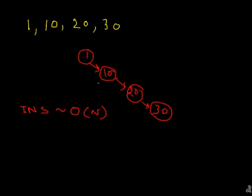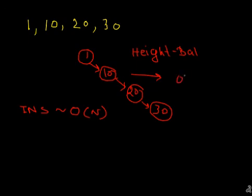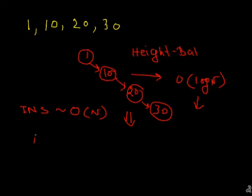To solve the skew problem there are techniques. There are trees called height-balanced trees. For height-balanced trees, it is guaranteed that the worst-case height is O(log n). That restricts insertion, deletion, and search complexities to O(log n). So height-balanced trees are very important. If you want to height-balance the specific case of 1, 10, 20, 30, when you add the third entry it will rotate the tree.